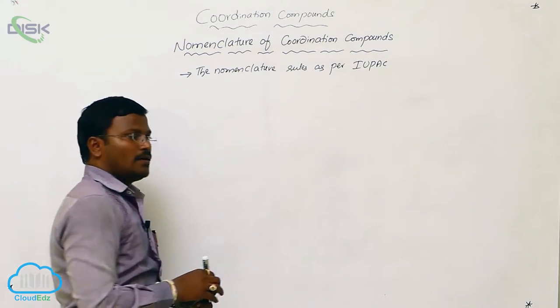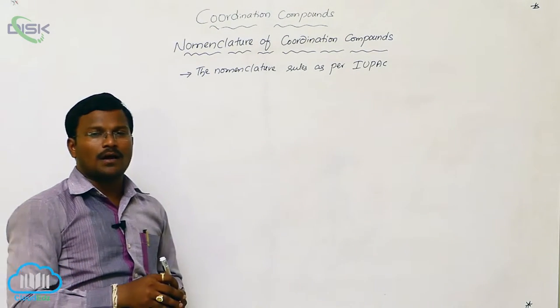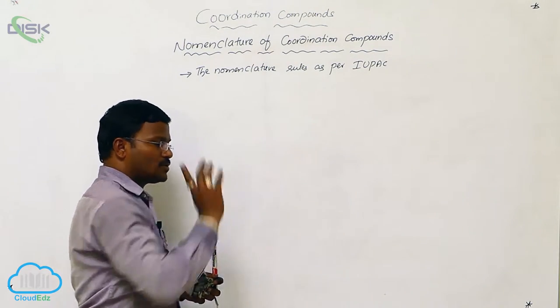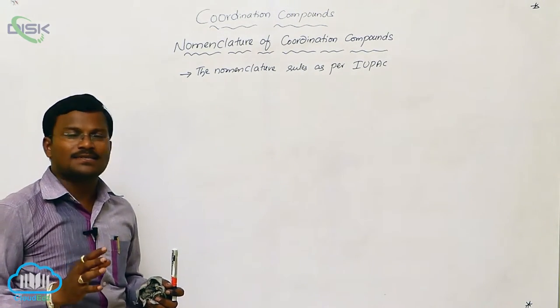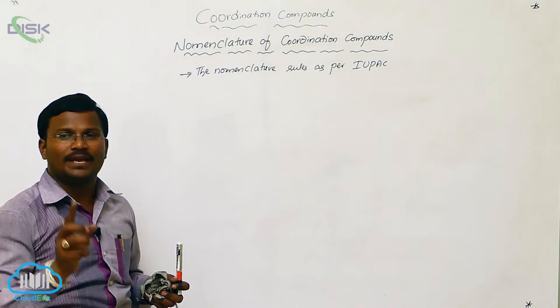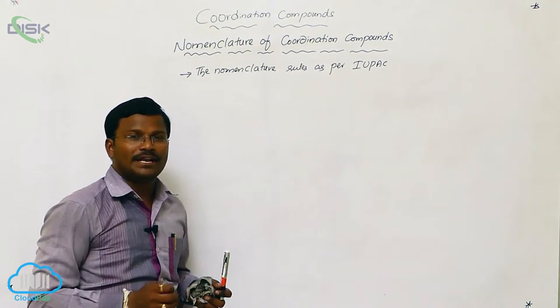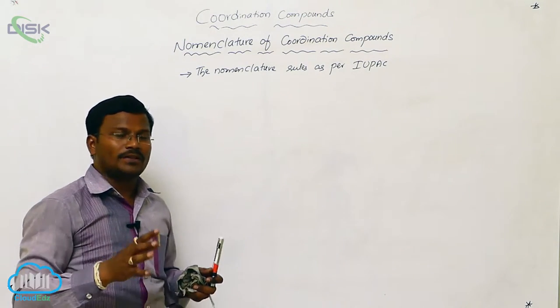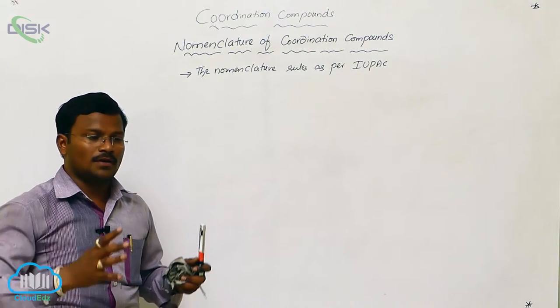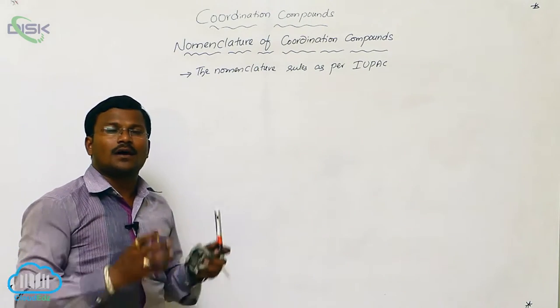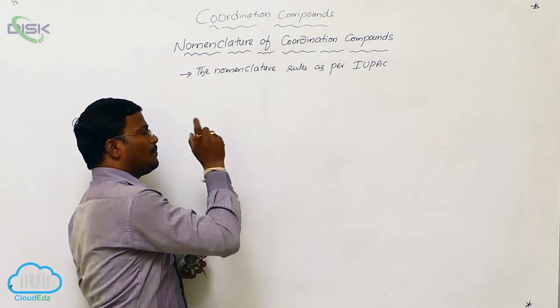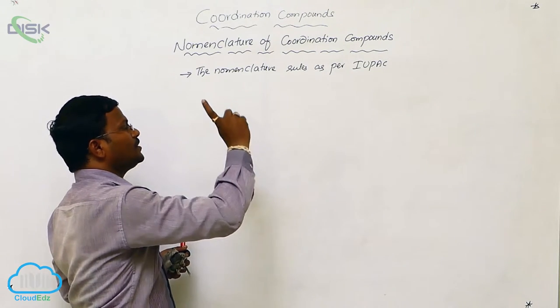This means a systematic manner of naming can be provided for coordination compounds—systematic names according to IUPAC. What is IUPAC? International Union of Pure and Applied Chemistry. They provide characteristics or rules based on which we can derive the perfect name for coordination compounds.